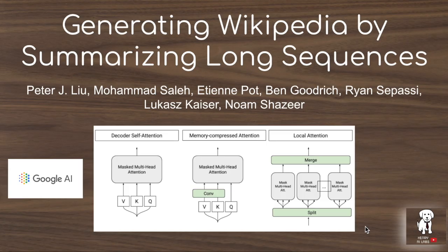This paper, 'Generating Wikipedia by Summarizing Long Sequences,' is from researchers at Google AI. They use a transformer decoder architecture with a novel approximation to full attention in order to generate opening sections of Wikipedia articles when given a collection of reference documents about the topic.